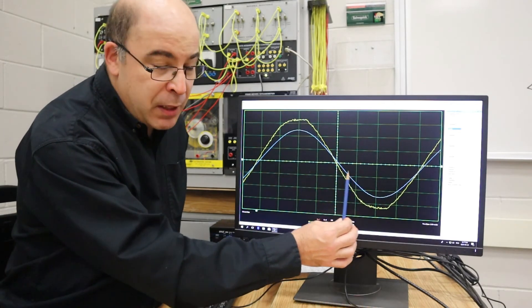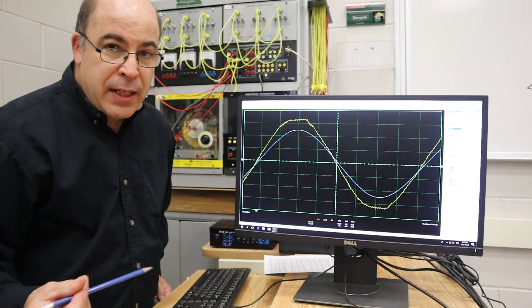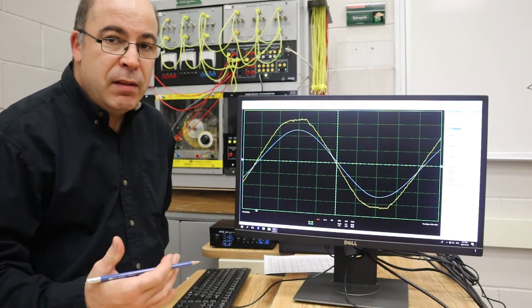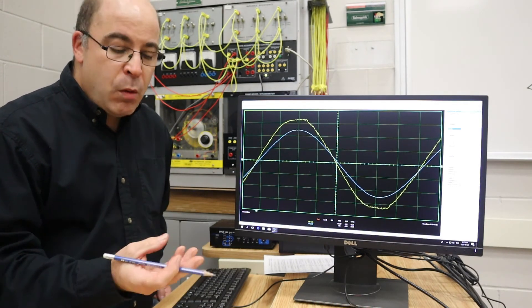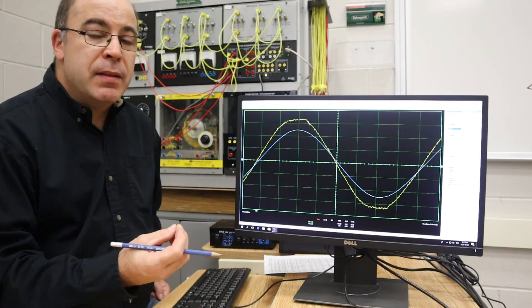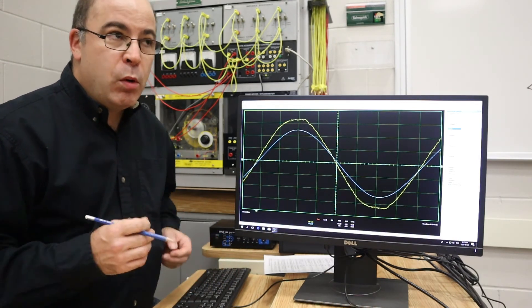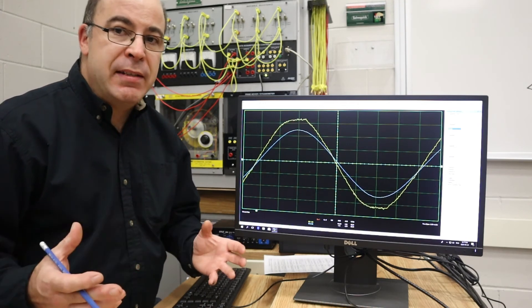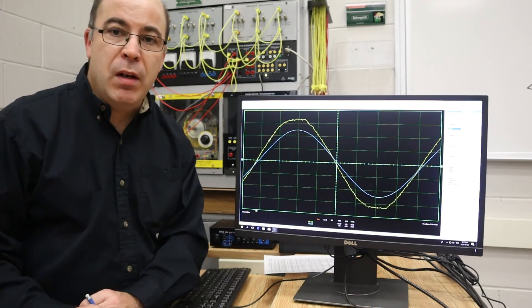When you have power that falls beyond this, you're actually inefficient, and the utility has to provide you with all the true power your equipment requires, plus all the reactive power, or what we would call the magnetizing current to make an electric motor run.